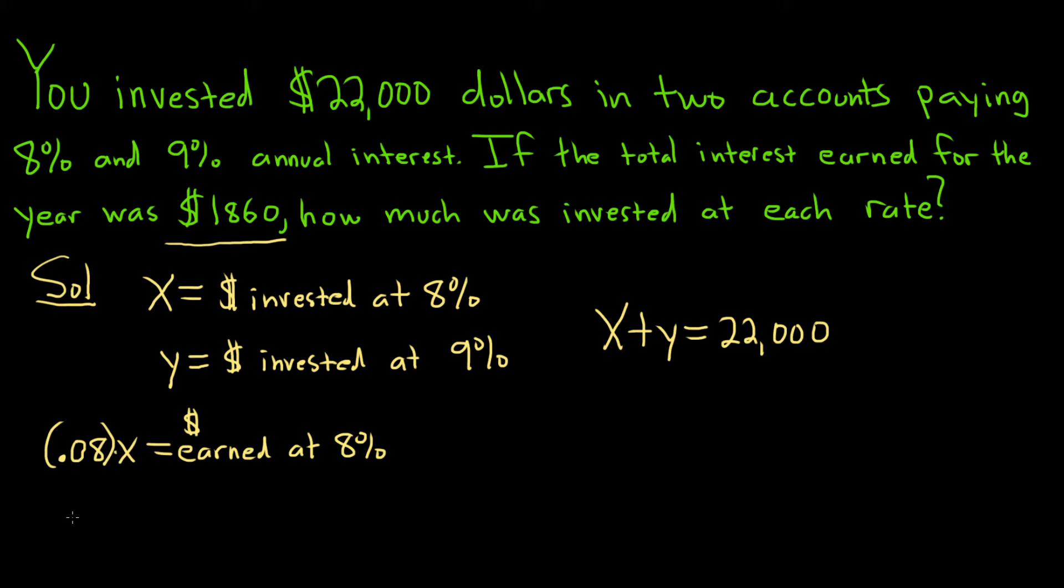That's why we're multiplying. Likewise, if you do 0.09 times Y, so 9% of the money invested at 9%, this is the money earned at 9%. So the money earned at 8% is 0.08X. And then the money earned at 9% is 0.09Y.